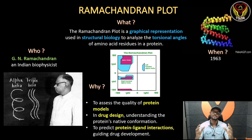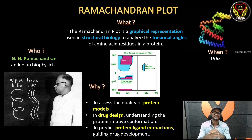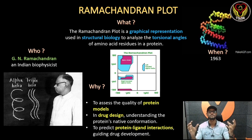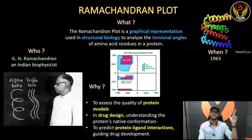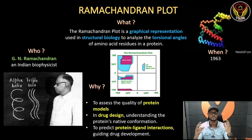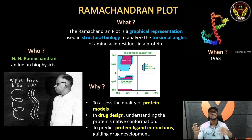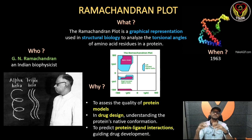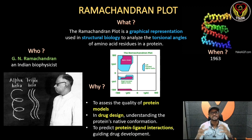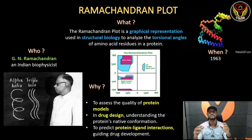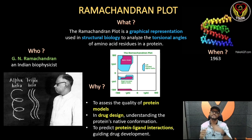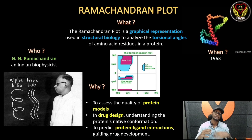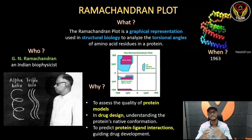Who created the graph? This is G.N. Ramachandran — an Indian biophysicist. In 1963, with advancements in technology, he worked on protein structure and calculations to develop the Ramachandran graph.